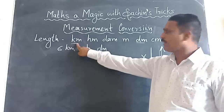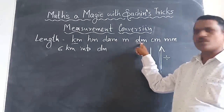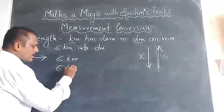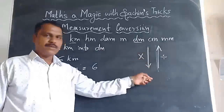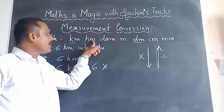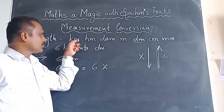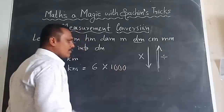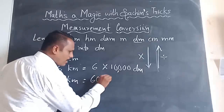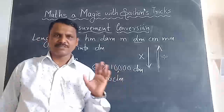Going from kilometer: 1, 2, 3, 4 steps to reach decimeter. So you have to put 4 zeros in front of 1. Now let's solve: 6 km — I am going higher to lower, so I will multiply. From kilometer to decimeter is 4 steps, so multiply by 10,000. Therefore 6 km is equal to 60,000 decimeters.